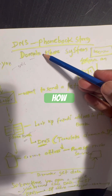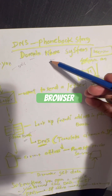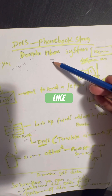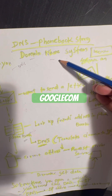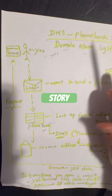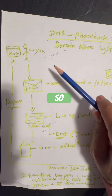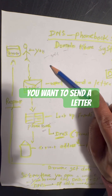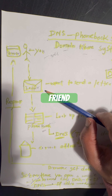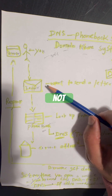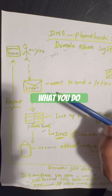Do you know how your browser finds a website like google.com? Let's make it simple with the phone book story. Imagine you want to send a letter to your friend — you know their name but not their address.